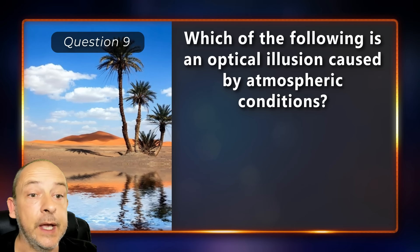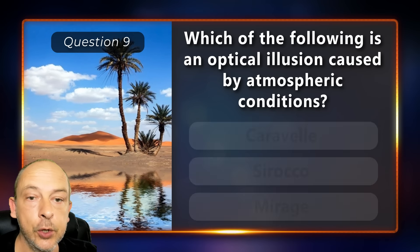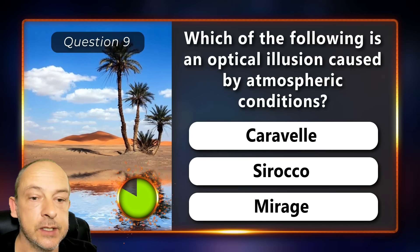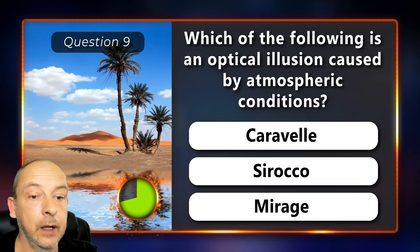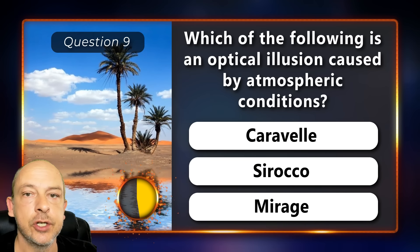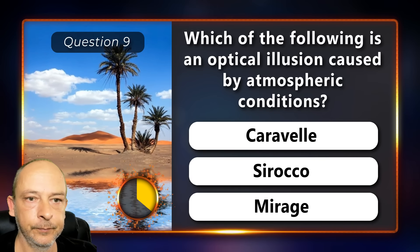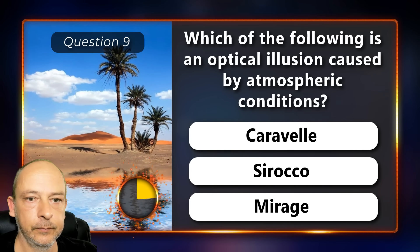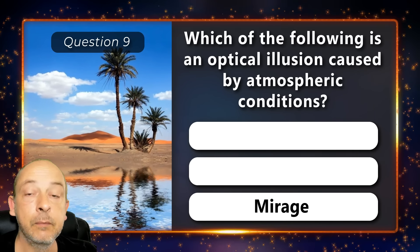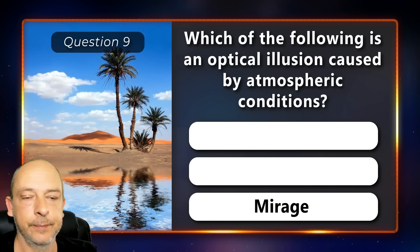Which of the following is an optical illusion caused by atmospheric conditions: a caravel, sirocco, or mirage? The answer is mirage.